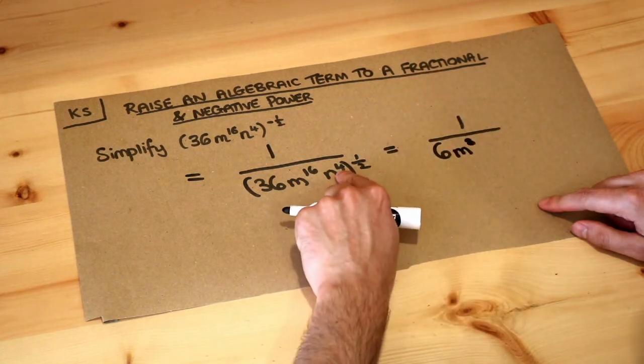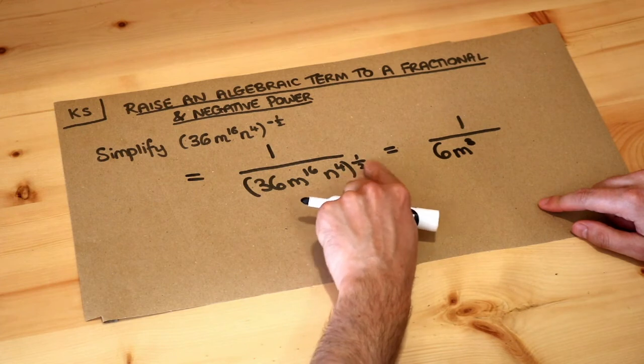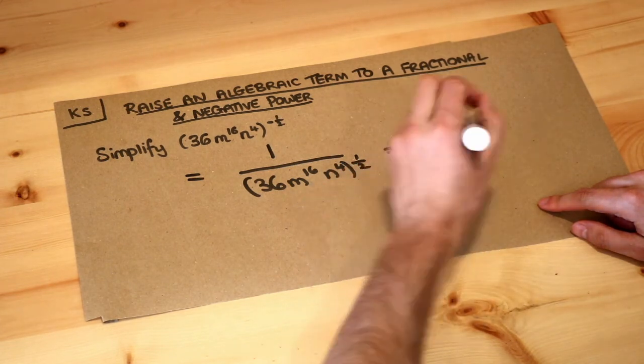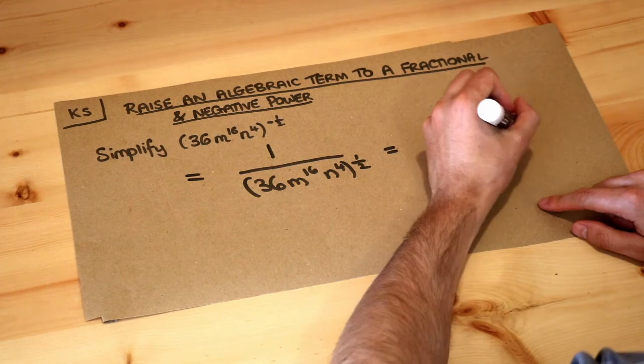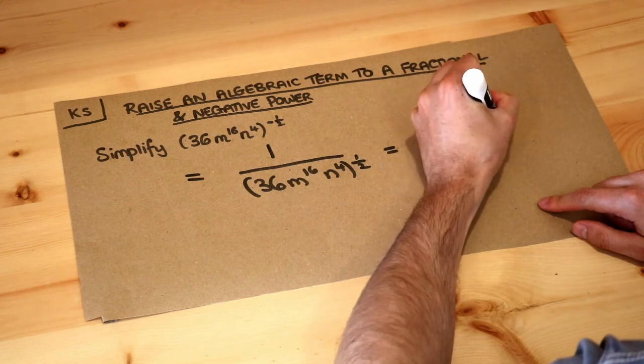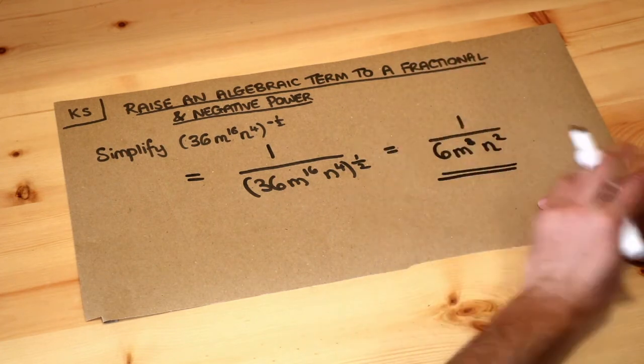And then we've got n to the 4 to the half. We're raising a power to a power, so we multiply the indices. 4 times half is 2, and you get n to the power of 2. And that is the final answer.